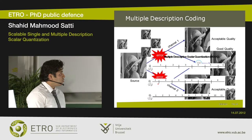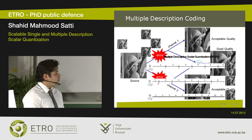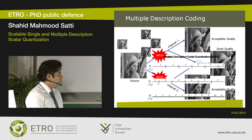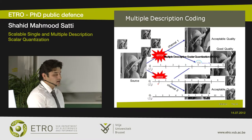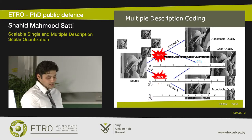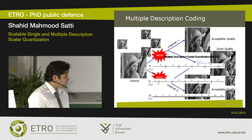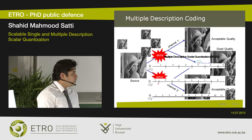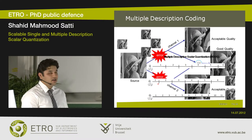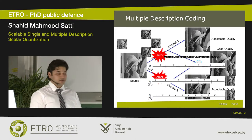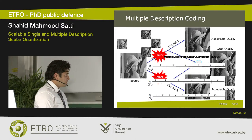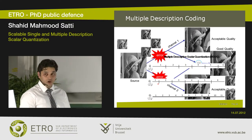MDSQ consists of two coarse quantizers, Q1 and Q2, which reconstruct the signal at distortion D1 and D2. These are the side quantizers, and they induce a fine central quantizer, Q0, which reconstructs the signal at a distortion D0.